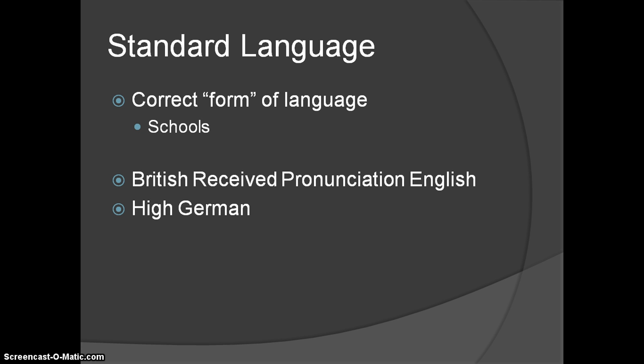Examples of standard languages include British Received Pronunciation English — the Queen's English — and High German in Germany. Germany has High German and Low German: Low German is spoken in the lower portion of the country, and High German in the northern portion. High German is seen as the standard form of the language. Just like in English, there are various dialects, but you still have the standard form.